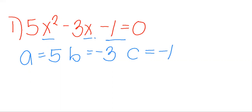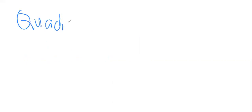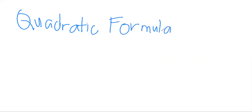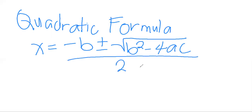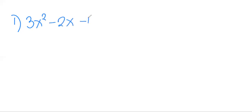Now let's proceed on how to solve a quadratic equation using the quadratic formula. The quadratic formula from our previous videos is: x equals negative B plus or minus the square root of B squared minus 4AC, all over 2A. This is the formula we will use to get the roots of our quadratic equation. For example, we're given 3x squared minus 2x minus 1 equals 0.